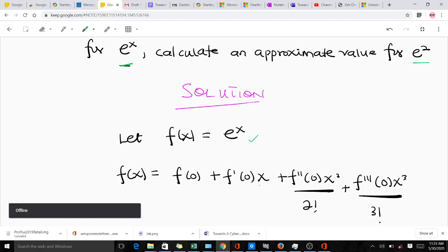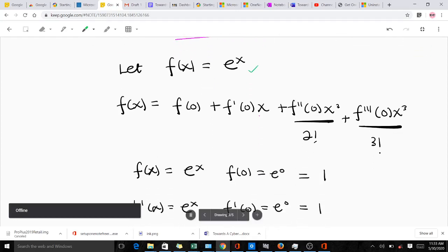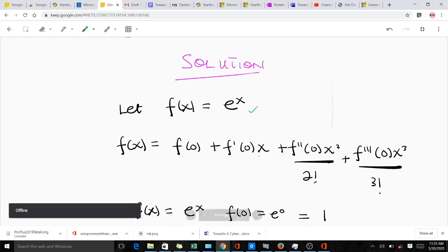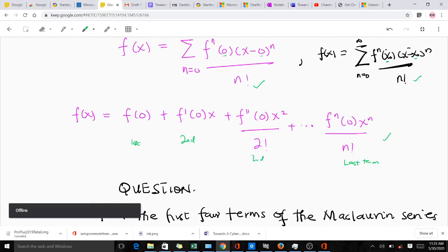Using the formula for finding the Maclaurin series, then f(x) will be equal to f(0) plus f'(0) times x, then plus f''(0) times x squared over 2 factorial. So we got this formula from the general formula here.